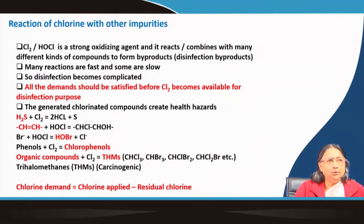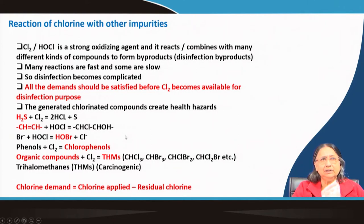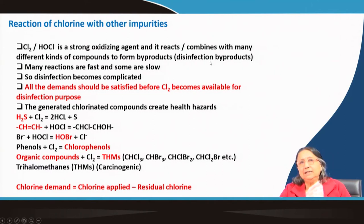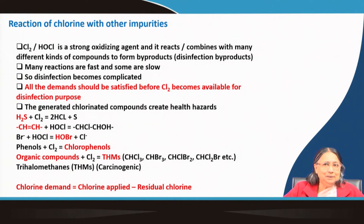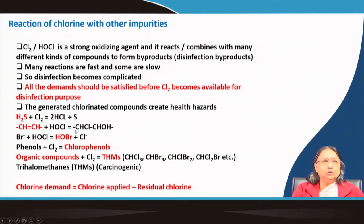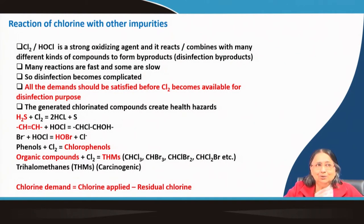Not only ammonia, but other things may also be present in water. HOCl is a strong oxidizing agent and reacts with many different kinds of compounds. The products are called disinfection byproducts (DBP). Some of these reactions are fast and some are slow. Since so many reactions are going on simultaneously, the process becomes complicated. Chlorine is consumed by other materials for other reactions.